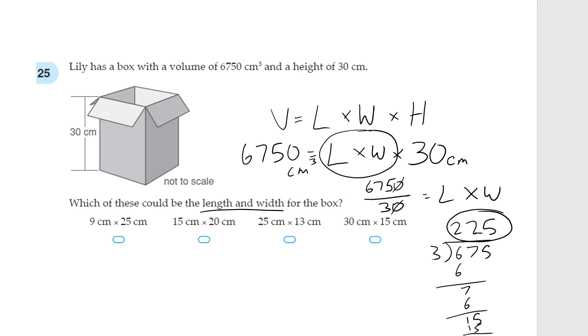And, which of these gives us 225? So, let's start off with this one. Let's check this. 25 times 9. So, let's do that. And, yep. 9 times 2 is 18. Plus 4 is 22. So, 225. There we have it. That's going to be our answer.